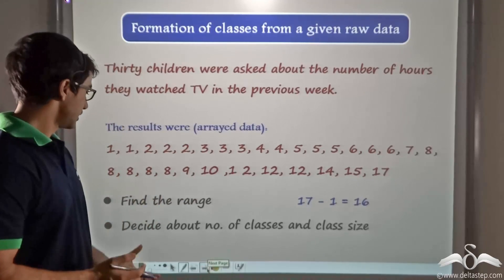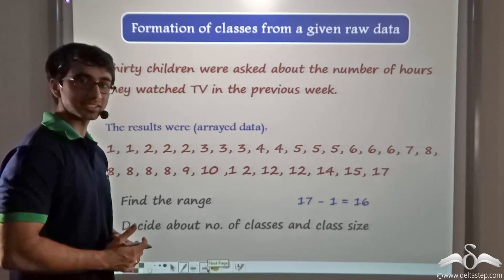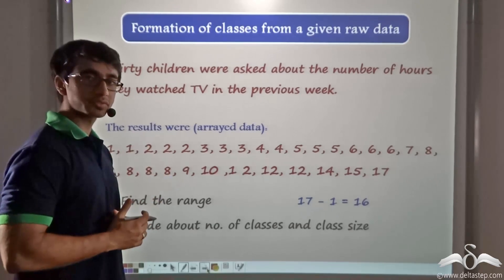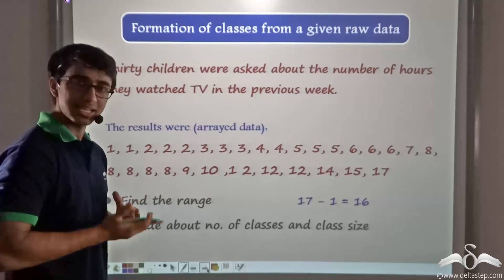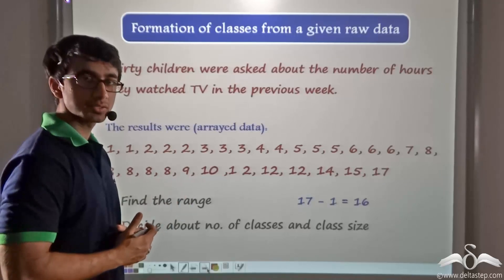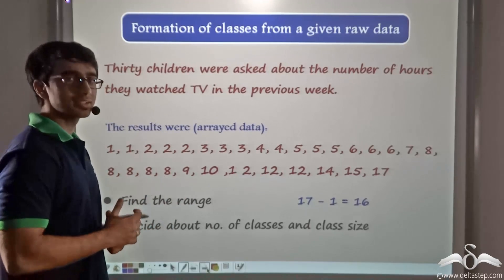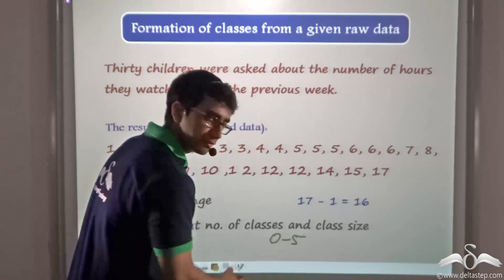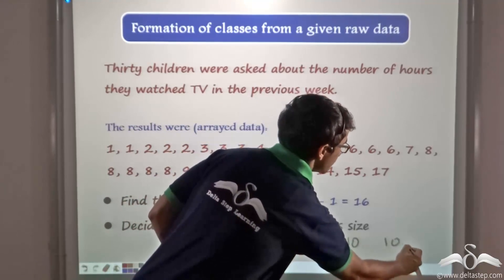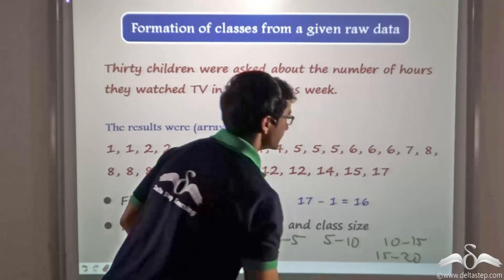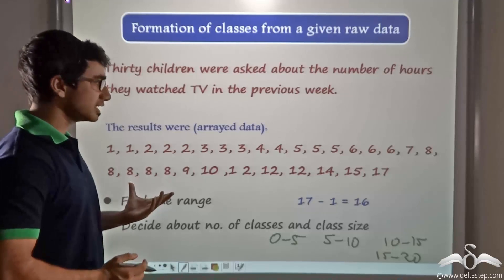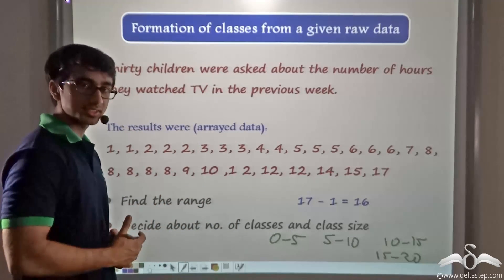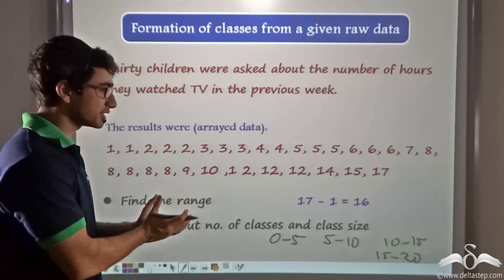Now I have to decide about the number of classes to take and the class size. Usually we consider a minimum number of classes. In this case, with 30 observations, I will consider a class size of 5 and a number of classes of 4: 0 to 5, 5 to 10, 10 to 15, and 15 to 20. Why only 4 classes? As you can see, no particular observation exceeds 20, and thus if I consider 4 classes of class size 5, I can easily and conveniently represent the given data.